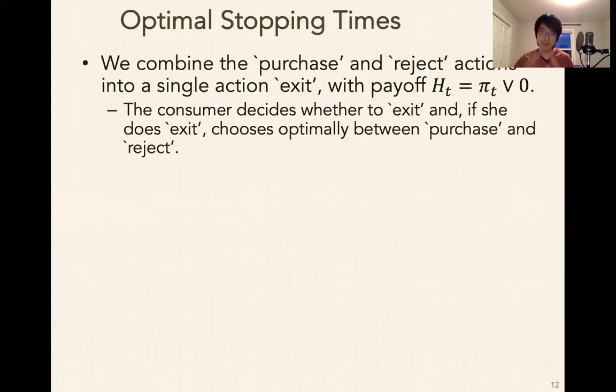So with that, what we can do with this formulation is we can actually phrase it as an optimal stopping time problem, and it's pretty straightforward how we do that. We just combine the purchase and reject action into a single action, which is the exit action. So this action has a payoff, which is the maximum. It's pi of T or zero. So it's the max of those two terms. And the way you can interpret this is that the consumer, instead of deciding whether to purchase, reject, or continue, you can think of it as the consumer deciding whether to exit or not. And when she does choose to exit, she just picks optimally between purchase and reject. So given that she's exiting at time T, if pi of T is greater than zero, she purchases. If zero is greater than pi of T, she rejects. Now, rather than having three choices, you can really view it as just having two. Do I stop, do I exit, or do I continue?